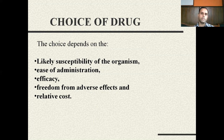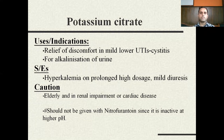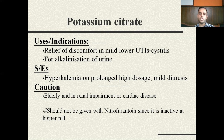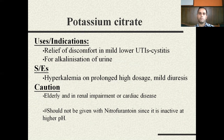Potassium citrate: as mentioned, for persons showing only mild symptoms of urinary tract infection, we can use potassium citrate. Potassium citrate is a urine alkalizer. It gives relief in case of discomfort in mild lower urinary tract infections like cystitis and urethritis. Side effects may include hyperkalemia on prolonged use and mild diuresis. Caution is needed in the elderly and patients with renal impairment. It should not be given with nitrofurantoin, since nitrofurantoin is inactive at higher pH.